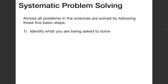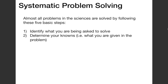In the first step, you identify what you are being asked to solve. This may seem like an obvious thing. However, approximately one fifth of errors in problem solving in general chemistry occur at this step.